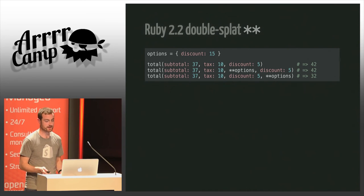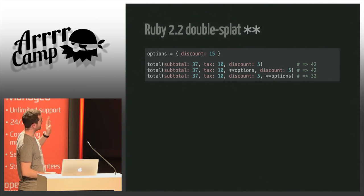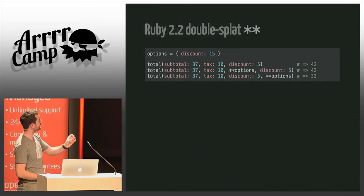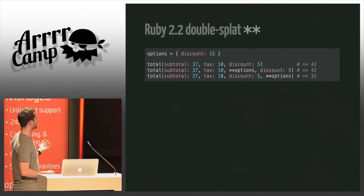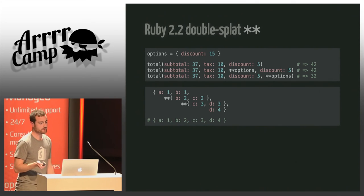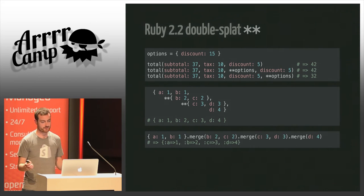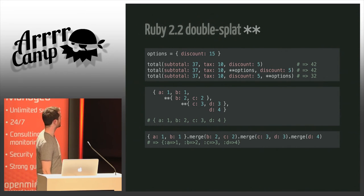Ruby 2.2 changed that and now it's much more useful. What's going on now is simply a series of merges that depend on the order of the keys. Now if you really want to, you can override a literal key with an options hash by double-splatting it after. If you have multiple hashes being double-splatted, the rightmost keys win. The equivalent Ruby code is really much more obvious — it's just merging from left to right.